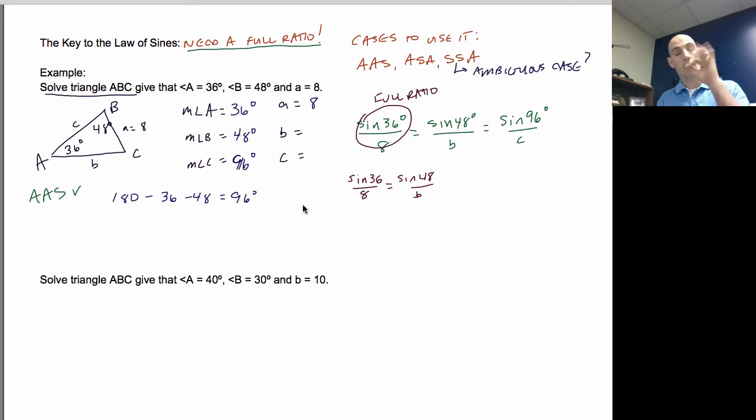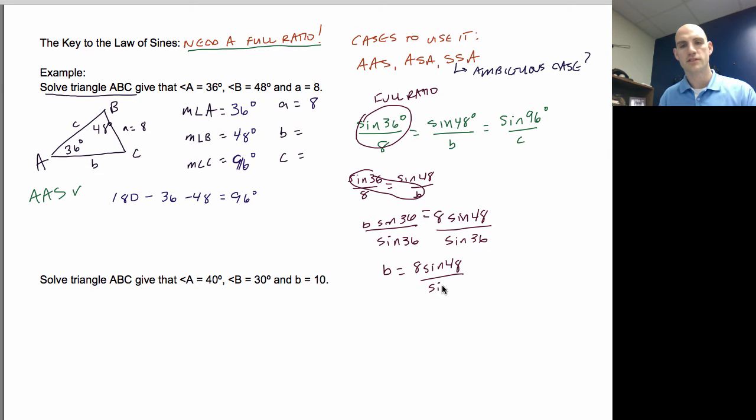One unknown, three knowns. So when I cross multiply, so I've got b sine 36 equals 8 sine 48. I divide by sine 36, divide by sine 36. So b is equal to 8 sine 48 over sine 36. That's pretty good. So put it into my calculator. A couple of notes. You've got to be in degree mode here because all of these are degrees. So b is going to be 10.11.